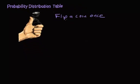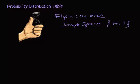So when you flip a coin — and I'm sure we've all done that — we know that there are two outcomes. Our sample space: we're going to get heads or tails. We also know that the chances of getting heads or tails are equally the same, so both have a probability of one-half. Probability of heads: one-half. Probability of tails: one-half.